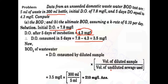The volume of the diluted sample is 300 ml, and the volume of undiluted sewage used is 5 ml. So BOD equals 3.5 multiplied by 300 ml divided by 5 ml, which gives us 210 mg per litre. So the 5-day BOD is 210 mg per litre.